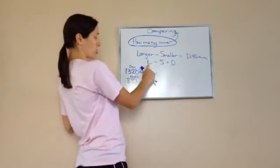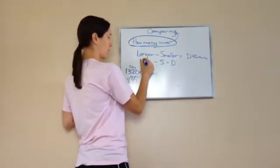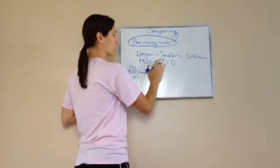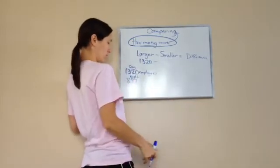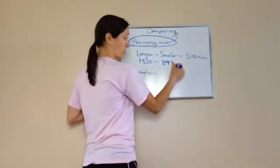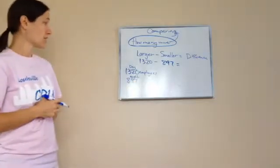Which one is the larger? 1,320. Which one is the smaller? 897. Very good. So it's pretty much that simple. 1,320 minus 897.